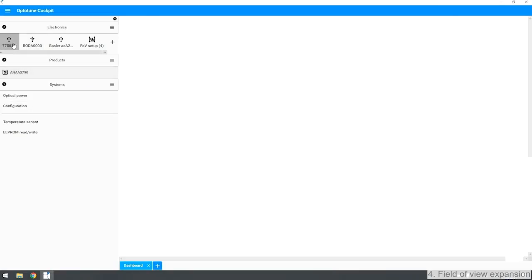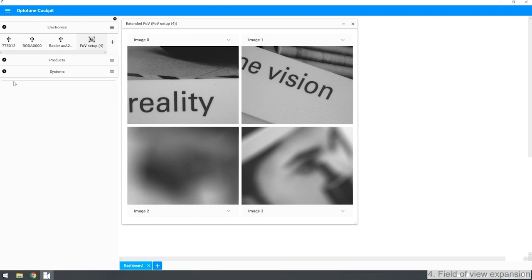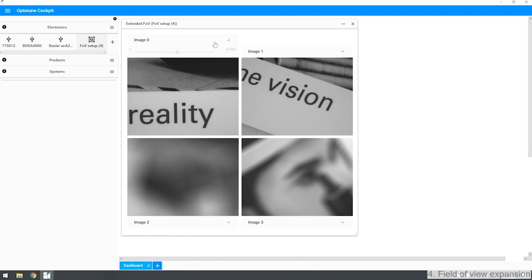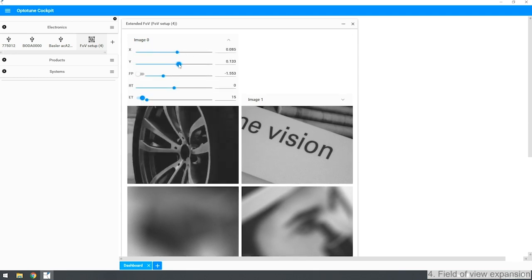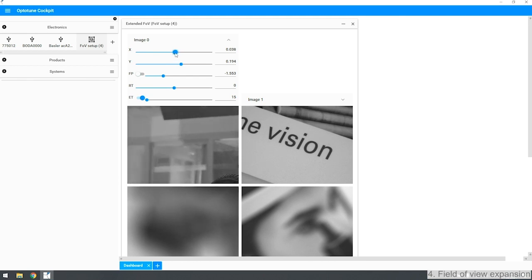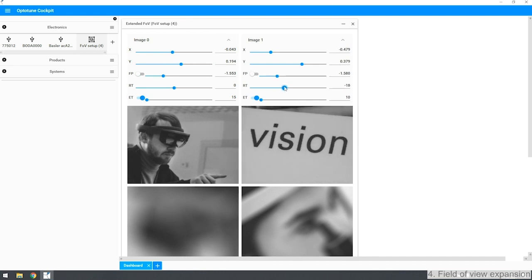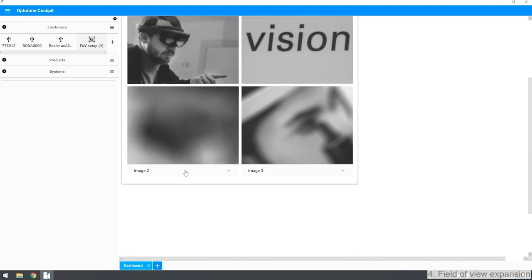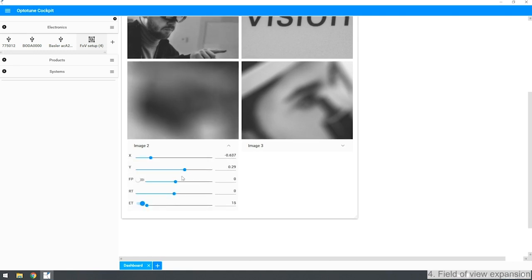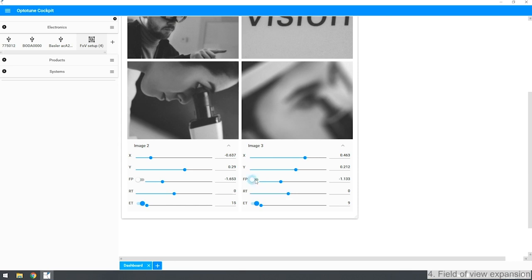Let's now see the setup in action using OptoTune Cockpit. On the left we can see that we are connected to the lens, the mirror and the camera. Moreover we have an application for the field of view expansion setup. The mirror is alternating between four different positions. We can now adjust the settings for each picture, such as image position and image rotation. Using the liquid lens we can manually adjust the focus using the slider or we can perform this step automatically using the contrast-based autofocus algorithm.